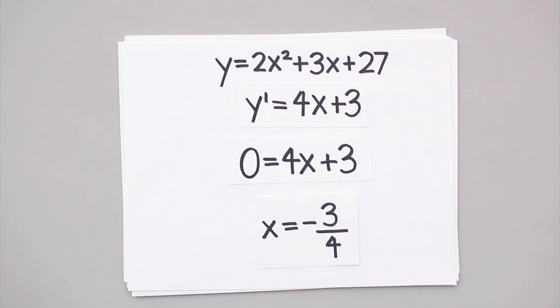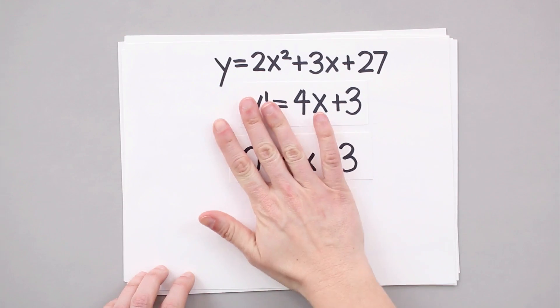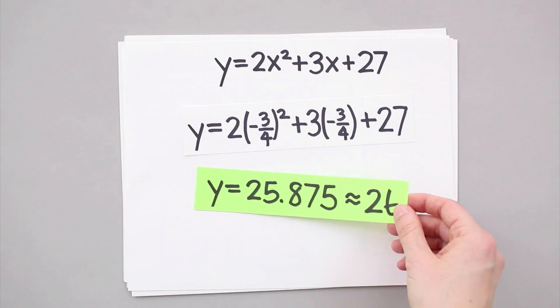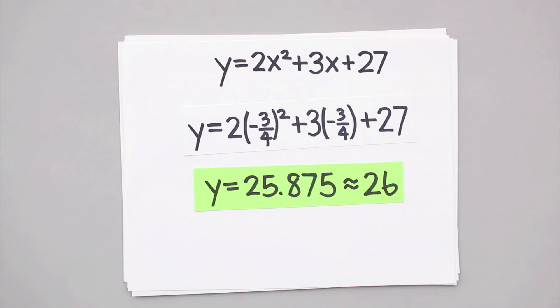But this still doesn't tell us how much food to feed to our neighbor's dog. So we now need to take this x value that we found, this potential critical point, and plug it into the original function to figure out the corresponding y value. Doing that, we get that we need to feed the dog at least 25.875 pieces of kibble, so we'll just go ahead and give him 26 pieces to make sure he has enough.